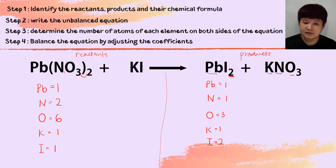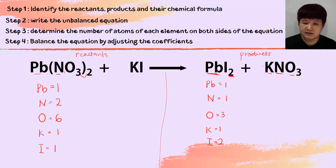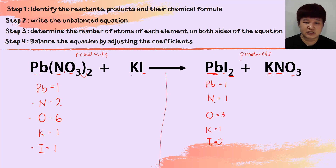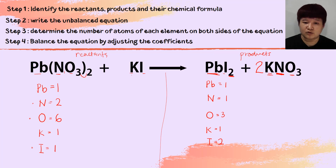In this question, each element only exists in one compound on the reactant side and one compound on the product side — nothing repeats. Looking at what is not balanced: nitrogen, oxygen, and iodine are not balanced. We balance nitrogen first. Reactant has 2 nitrogen, product has only 1. We put a coefficient of 2 in front of KNO₃. This changes potassium to 2, nitrogen to 2, and oxygen to 2×3 = 6.